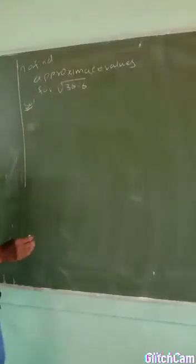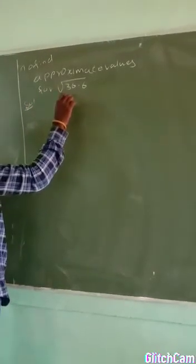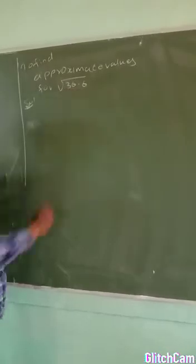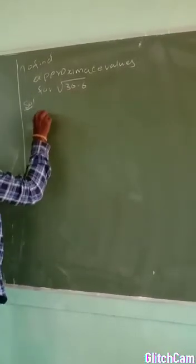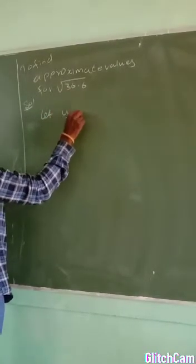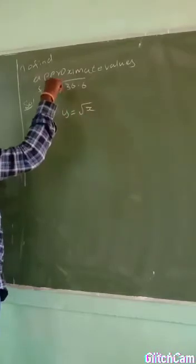Welcome students, today I am going to show how to find the approximate value for square root of 36.6. So I assume let y equal to root x. Here square root is there, that is, it is square root of x.